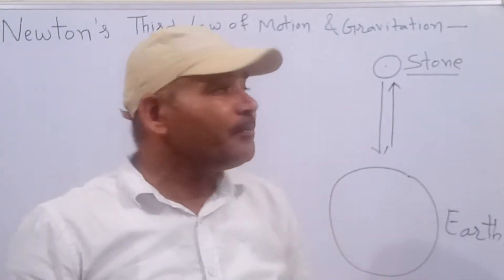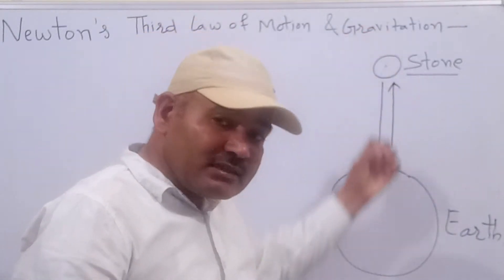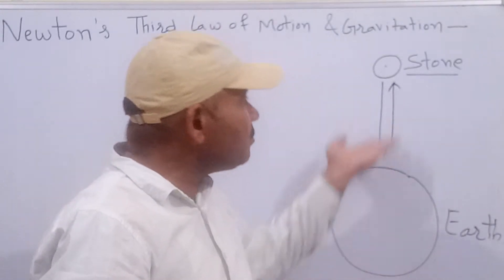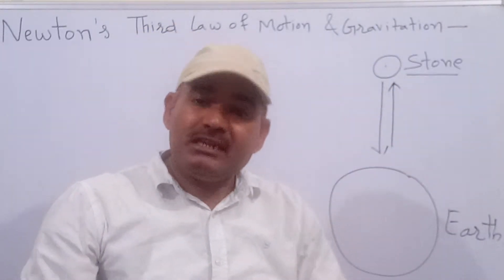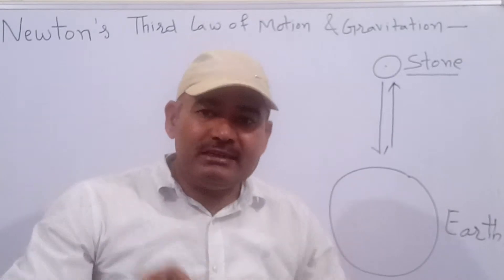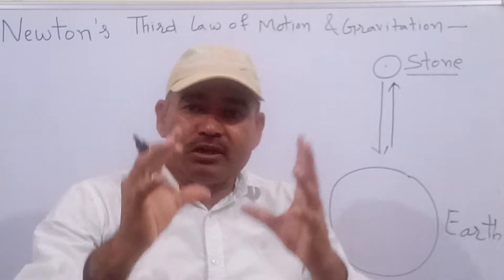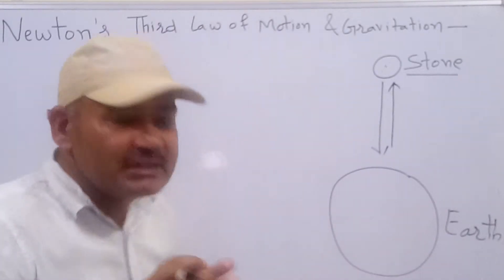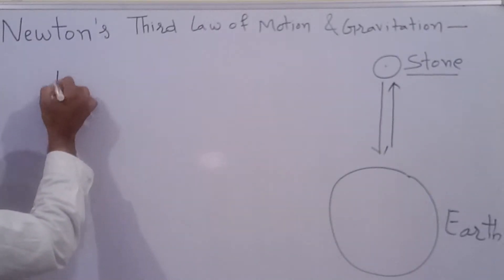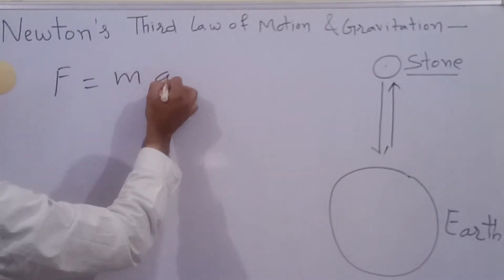लेकिन हम practically देखते हैं Earth stone को attract कर लेती है जबकि Earth move नहीं करती stone की तरफ। इसके पीछे क्या logic है, आइए हम इसको समझने की कोशिश करते हैं। According to Newton's second law of motion, F is equal to MA.